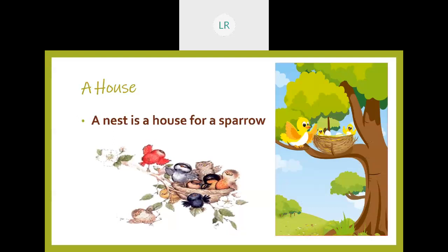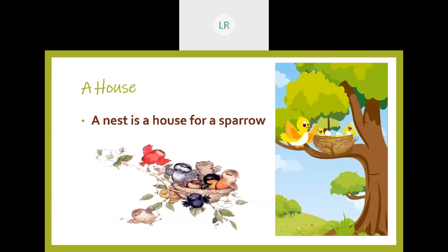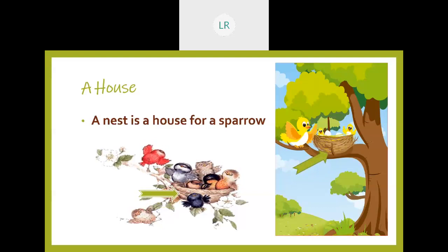Children, what do you see in this picture? You are seeing the birds inside the nest. Which is the house for the sparrow? A nest is a house for the sparrow. Children, have you heard the sound? What sound did you hear? Birds chirping! You hear that chirping sound? Where is the nest here? Here is a nest. So a nest is a house for the sparrow.